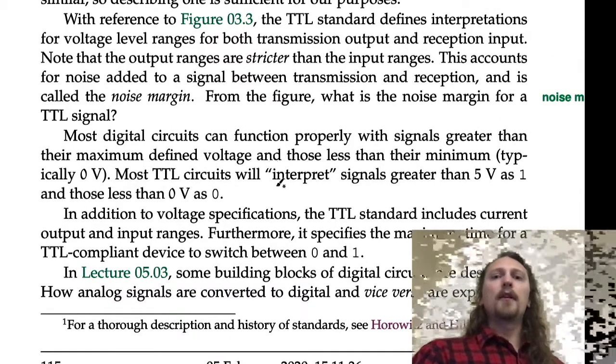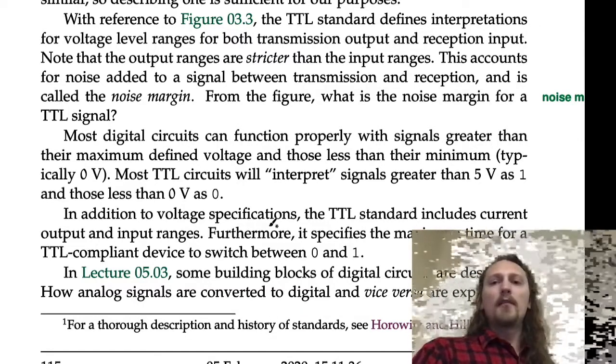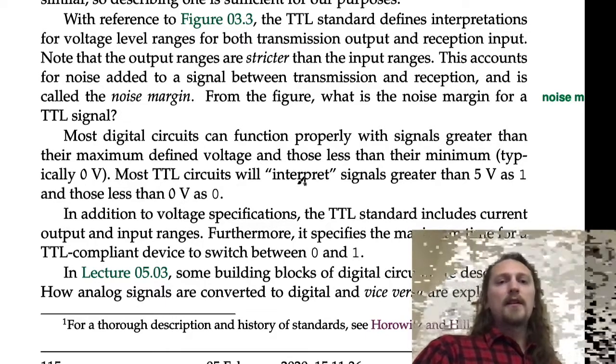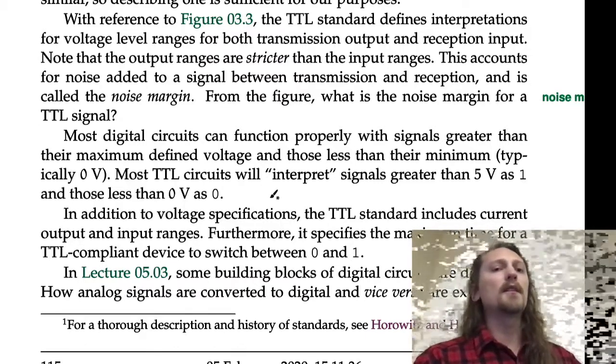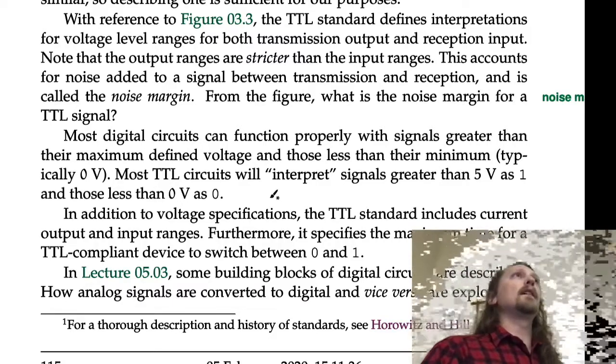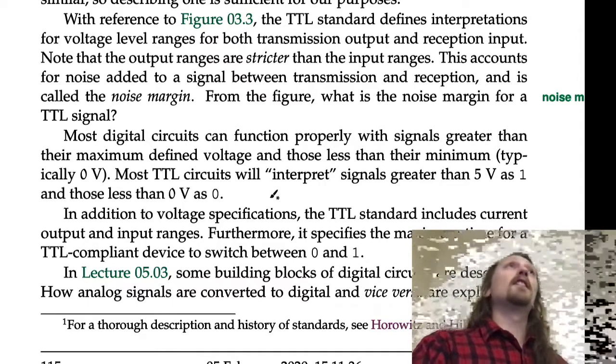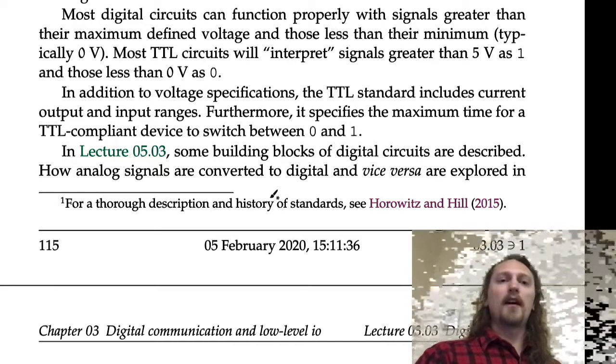Most digital circuits can function properly with signals greater than their maximum defined voltage and those less than their minimum, typically zero volts. Most TTL circuits will interpret signals greater than 5 volts as 1 and those less than 0 volts as 0, but it's not guaranteed by the standards. So you don't want to shoot for that—that's not your design goal, to rely on that.